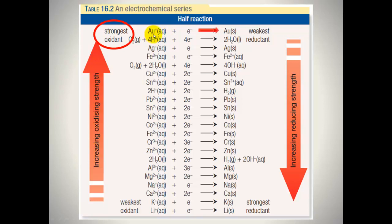These gold ions will undergo reduction to form gold solid. The strongest reductant is found at the bottom right hand side of the electrochemical series, and this species will undergo oxidation.